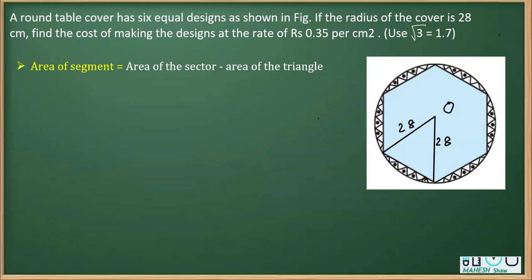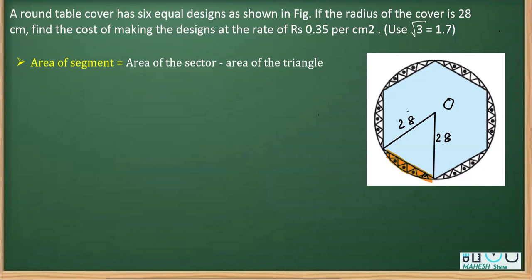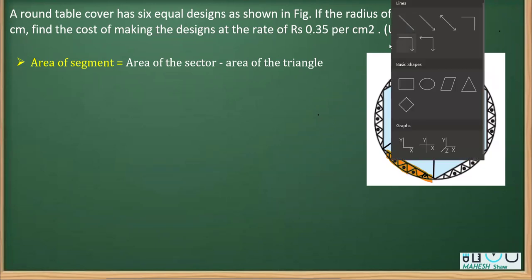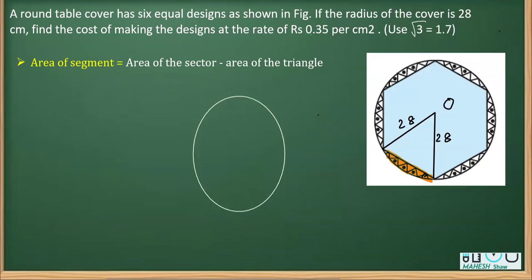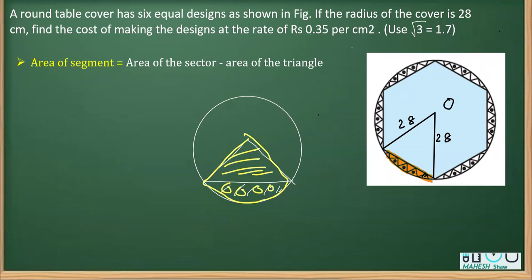We shouldn't take root 3 as 1.732 or 1.73. Since we need to get the total area, we will calculate the area of one design and multiply by six to get the area of the whole design. From the figure, you can see that the design is in the shape of a segment. The area of a segment is the area of the sector minus the area of the triangle. So to get the area of this segment, we use: area of sector minus area of triangle.